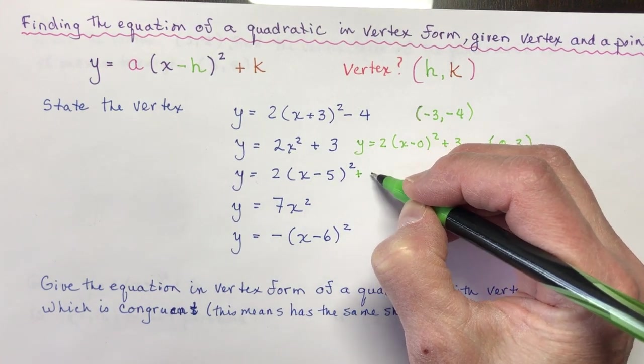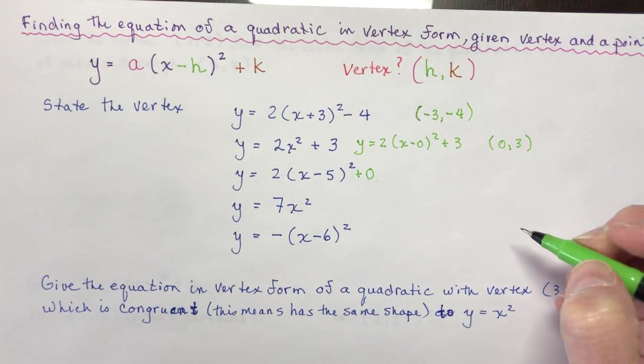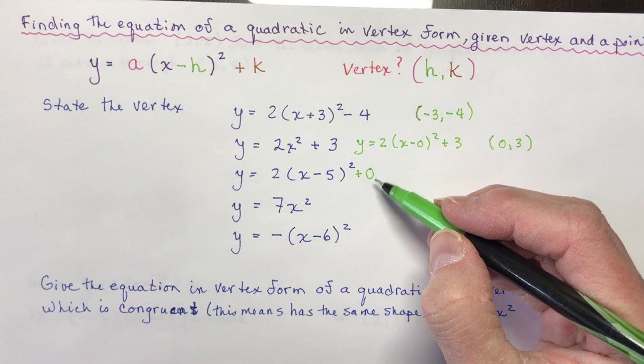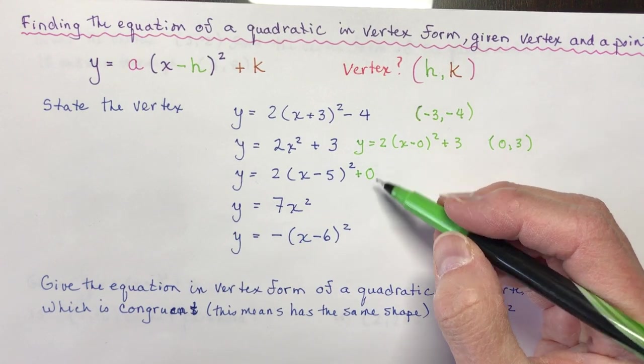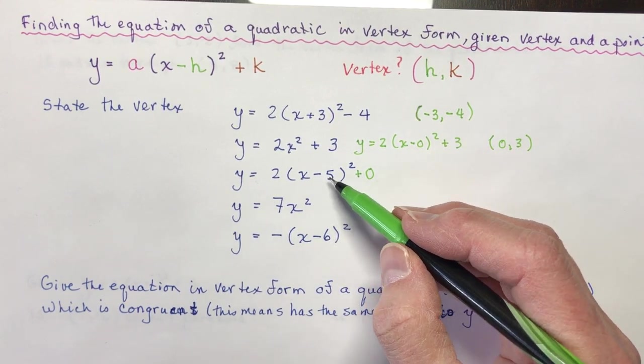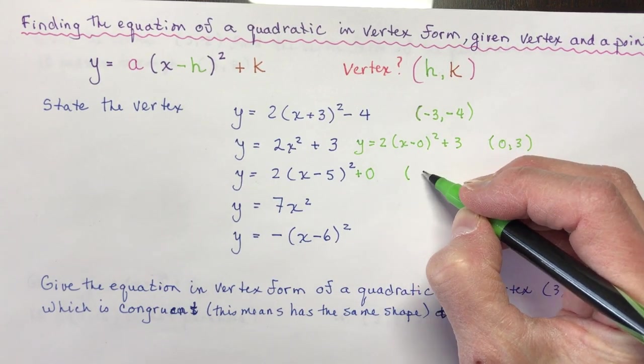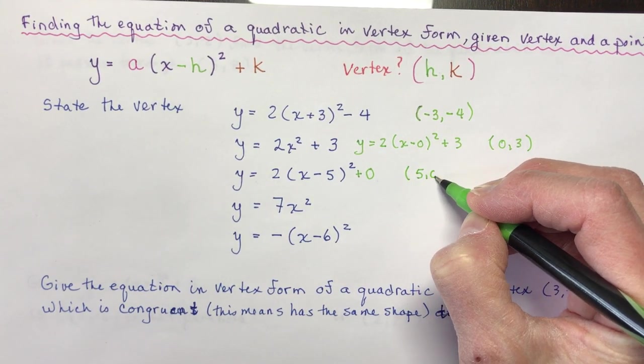So in this case, I could write this equation like this. So really, the k is 0. In other words, it wasn't shifted up or down. It was just shifted right 5 units. So that 0, 0 went to 5 and 0.